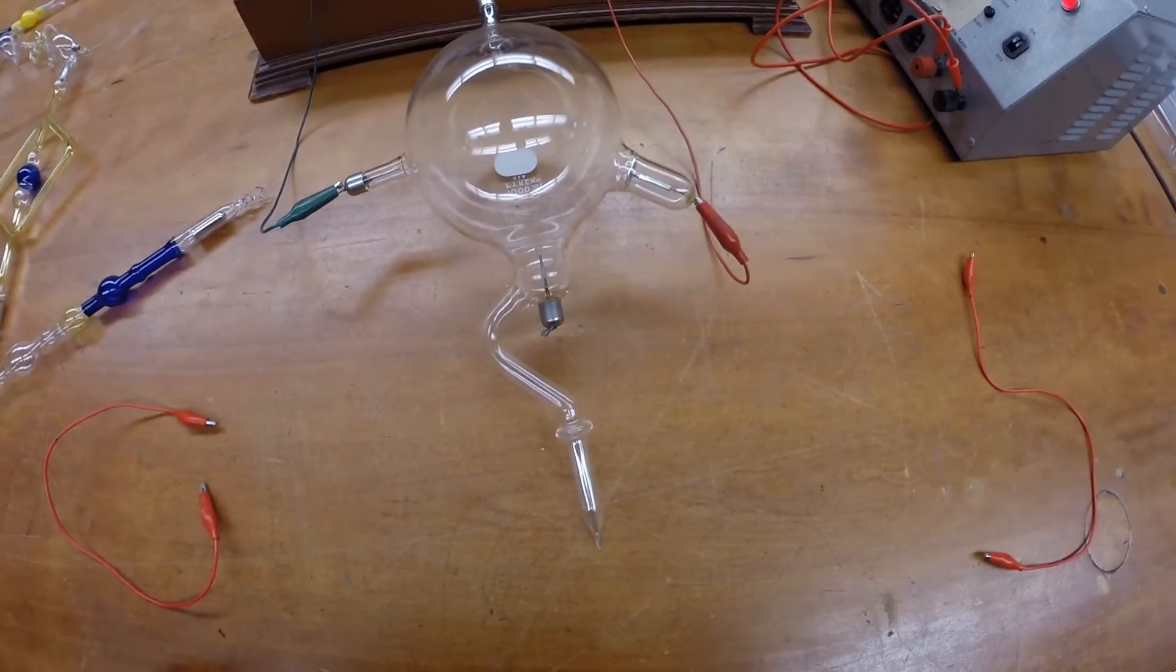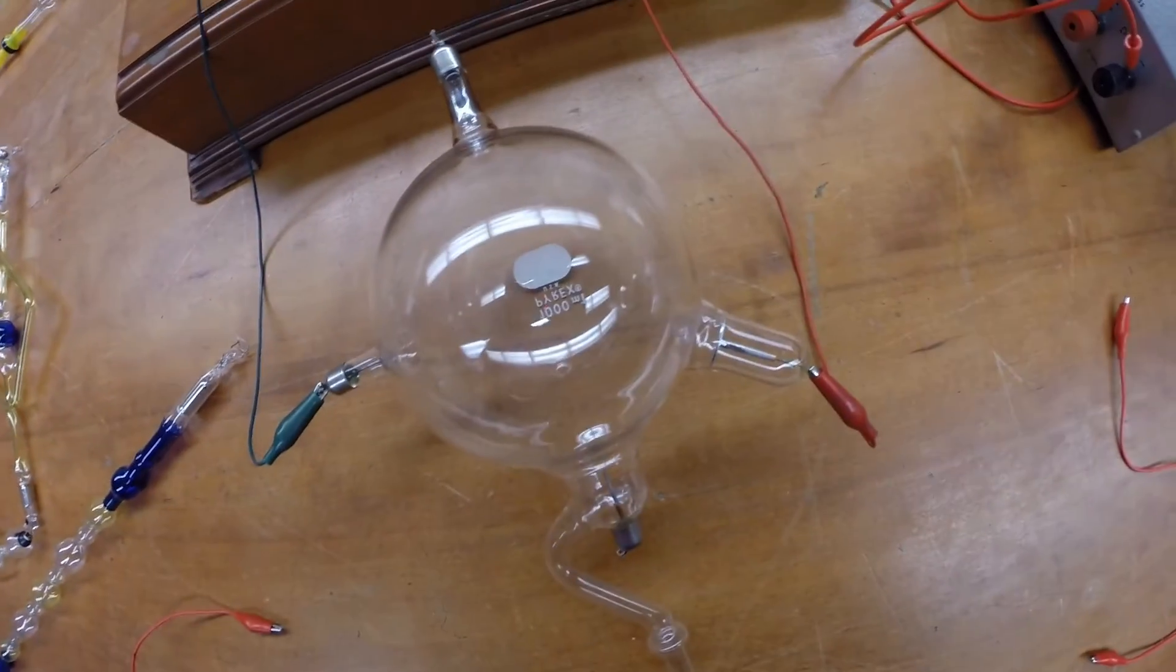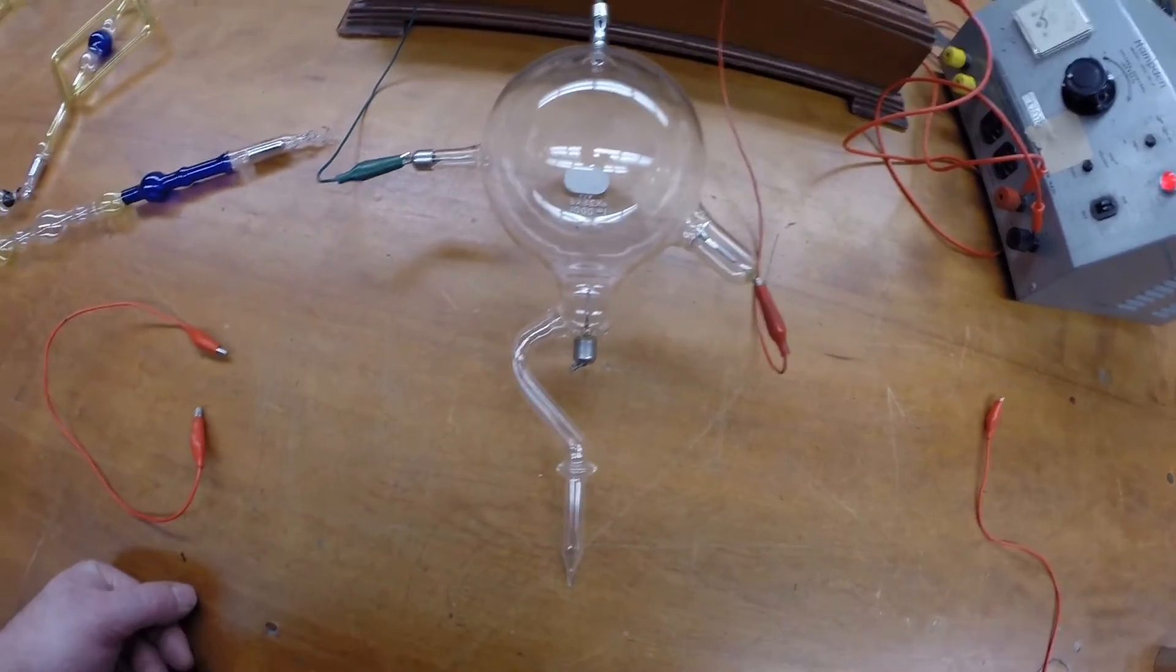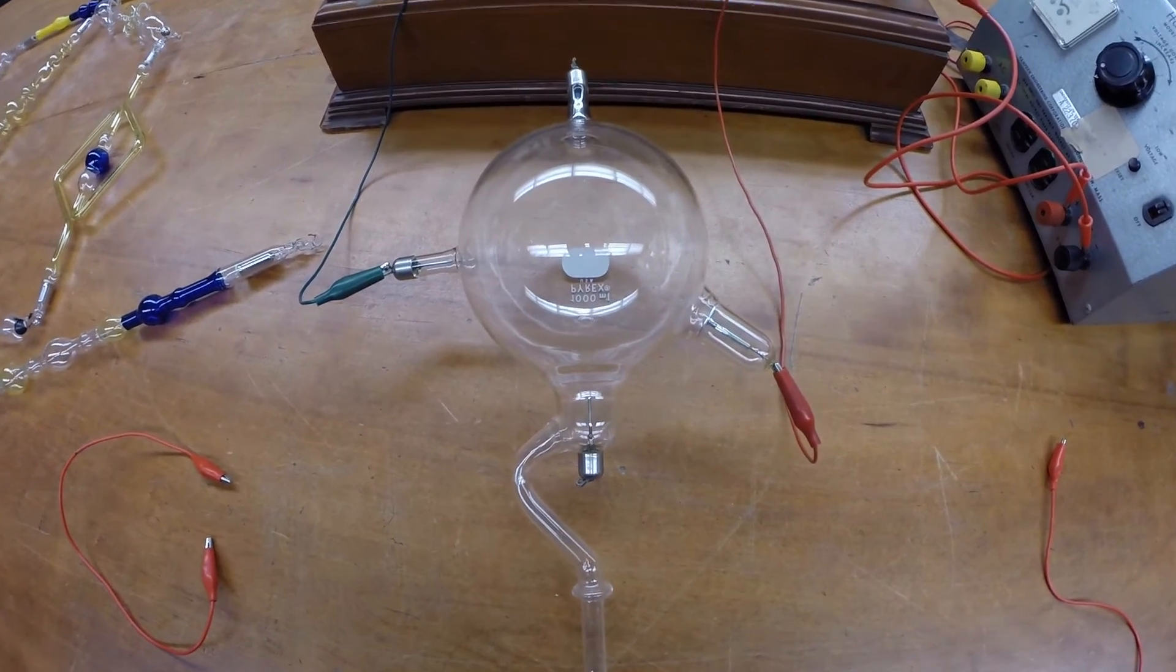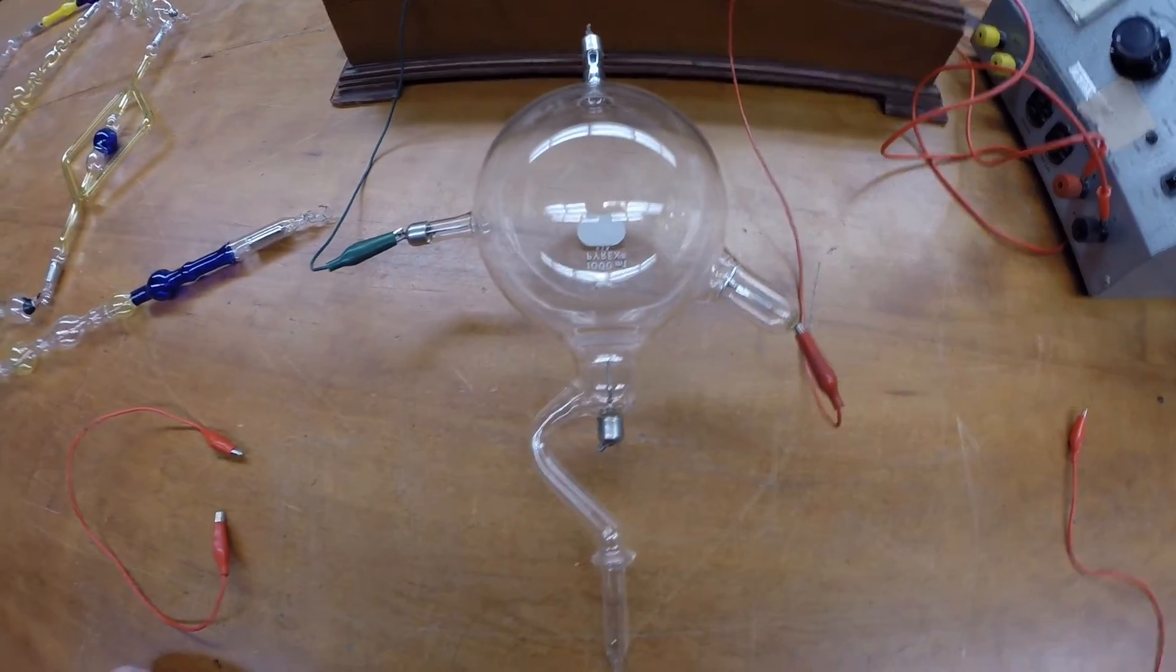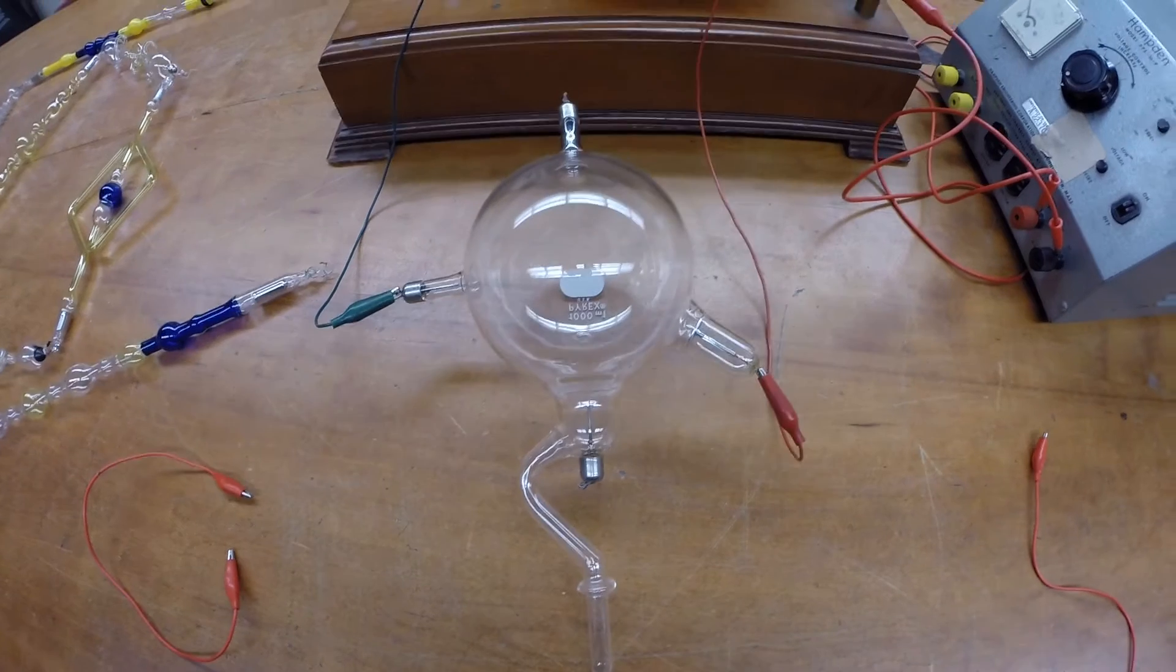This is another cathode ray tube, homemade. This looks like it has a different gas pressure in it, so we're actually going to get a much tighter beam of electrons.